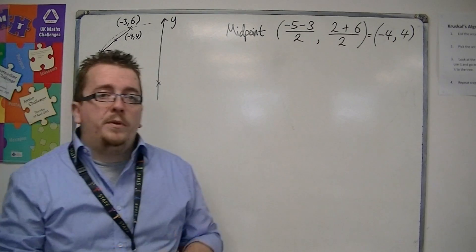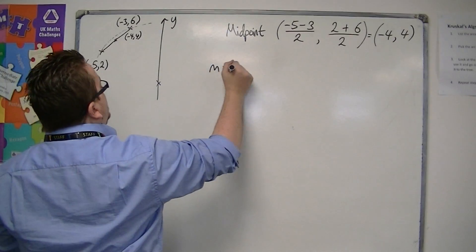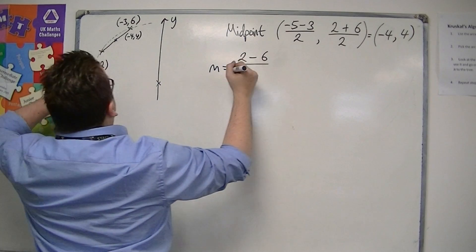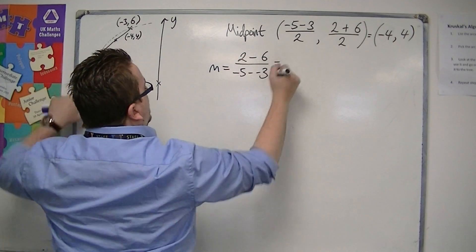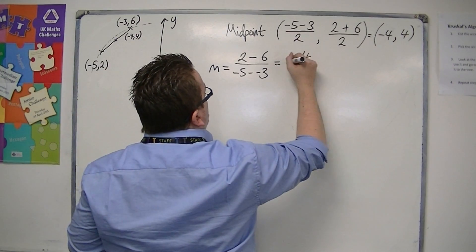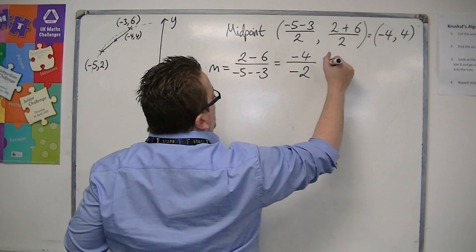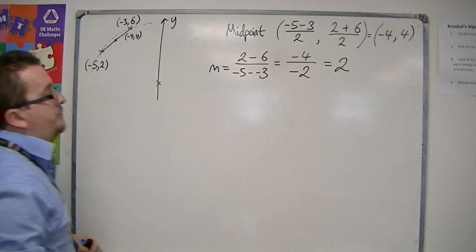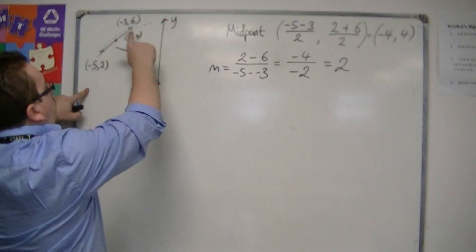Now, in order to find the perpendicular bisector, we're also going to have to know the gradient of that chord. So the gradient, m, is the difference in the y's divided by the difference in the x's. So we have minus 4 in the numerator, and we have minus 5, plus 3, so minus 2, in the denominator. And minus 4 divided by minus 2 is 2. So we know that the gradient of the chord is 2.